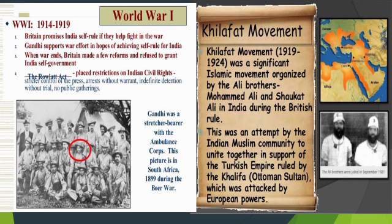The Khilafat Movement: Shaukat Ali and Muhammad Ali were its political leaders. The British attacked Turkey, the seat of the Caliph. After that, Muslims all over the world who opposed British actions launched the Khilafat Movement, which lasted from 1919 to 1924.